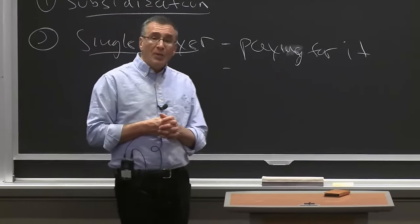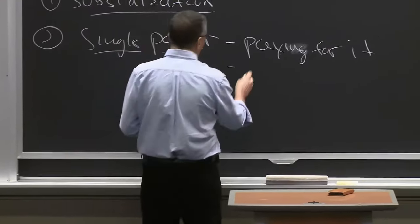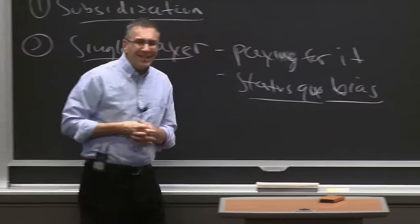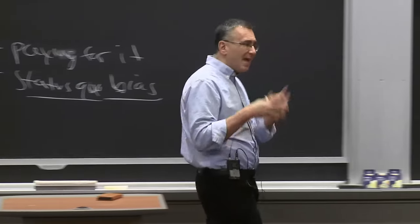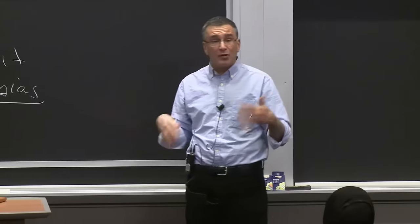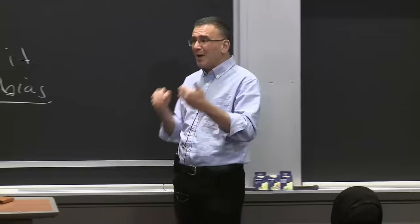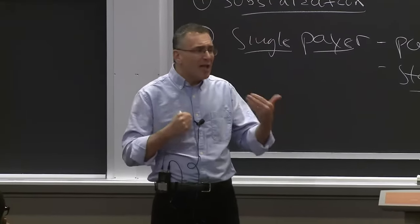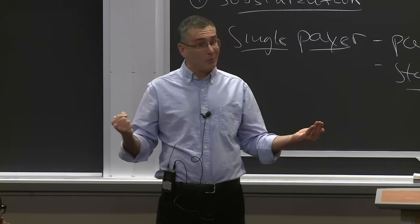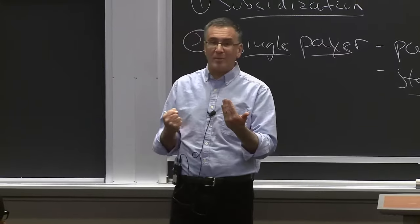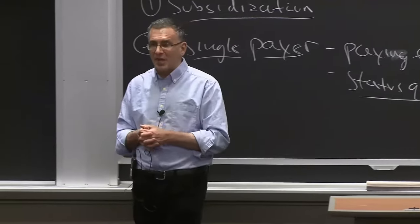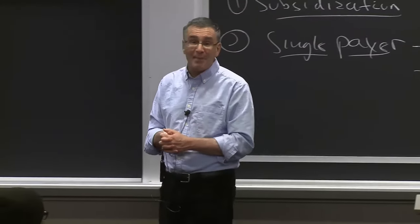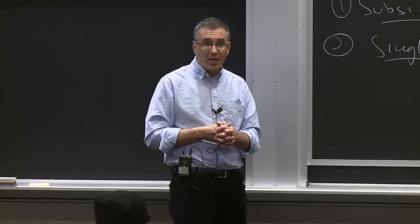The second problem is status quo bias — a general feature of human thinking where it's harder to give up what you're used to than to grab something new. Remember the mug example: you had to pay more to take the mug away than someone was willing to pay to buy it. Right now, 60% of Americans have employer-sponsored insurance. If you say 'give that up for Bernie care,' they'll say 'I kind of like my employer-sponsored insurance.' That makes it hard to achieve radical change to the economic system.